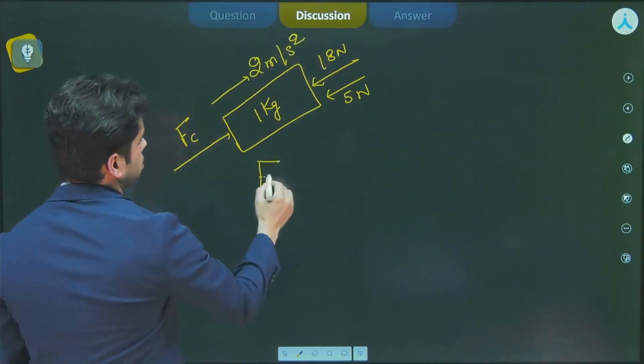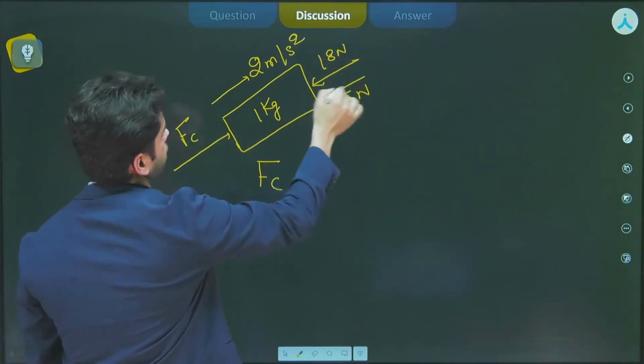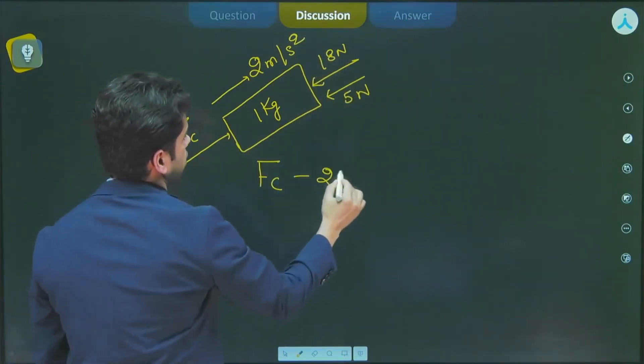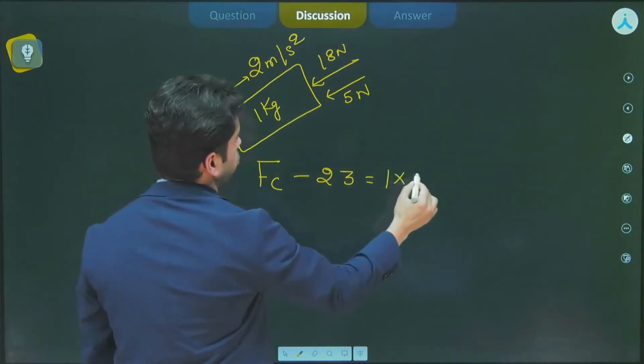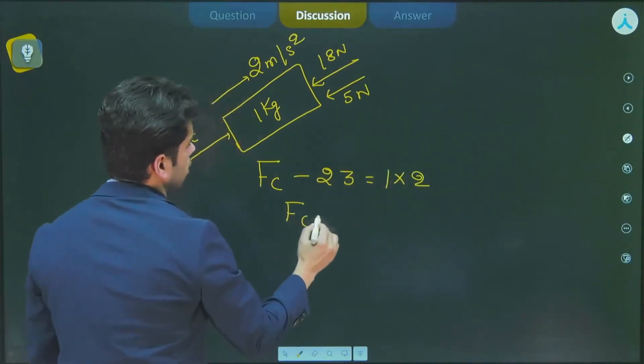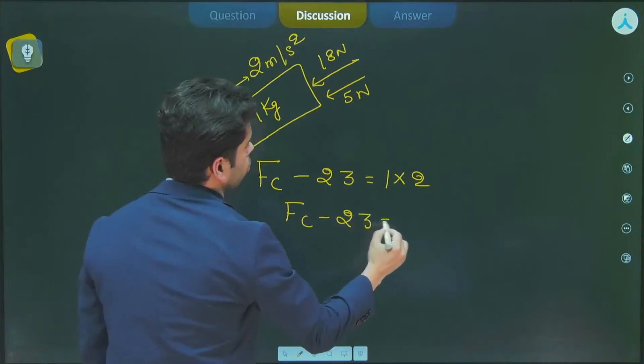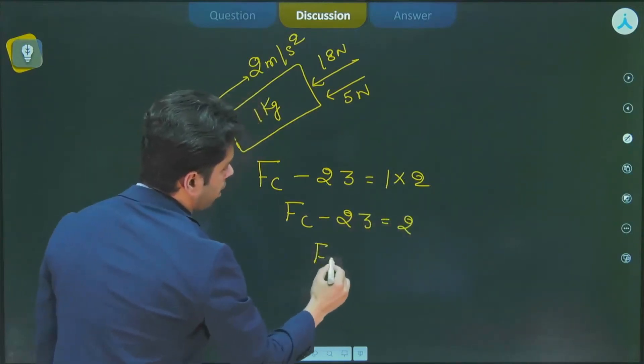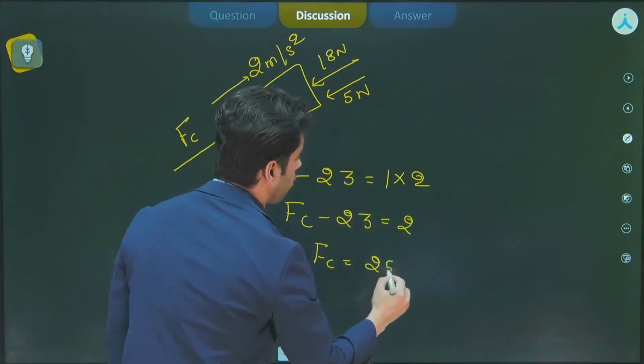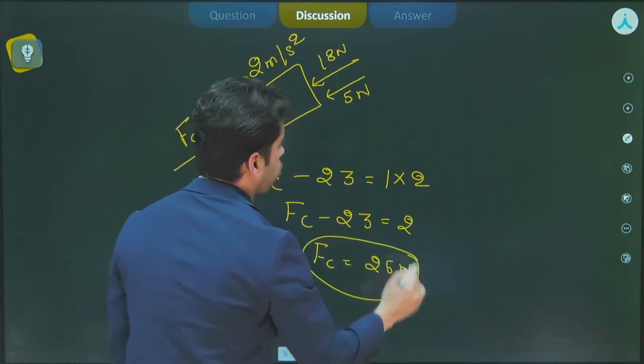So what I can write from Newton's second law of motion: Fc minus 18 plus 5, that is 23, should be equal to the mass into acceleration, so 1 into 2. So Fc minus 23 should be equal to 2. Fc from here is coming out to be equal to 25 N. The contact force is coming out to be 25 N.